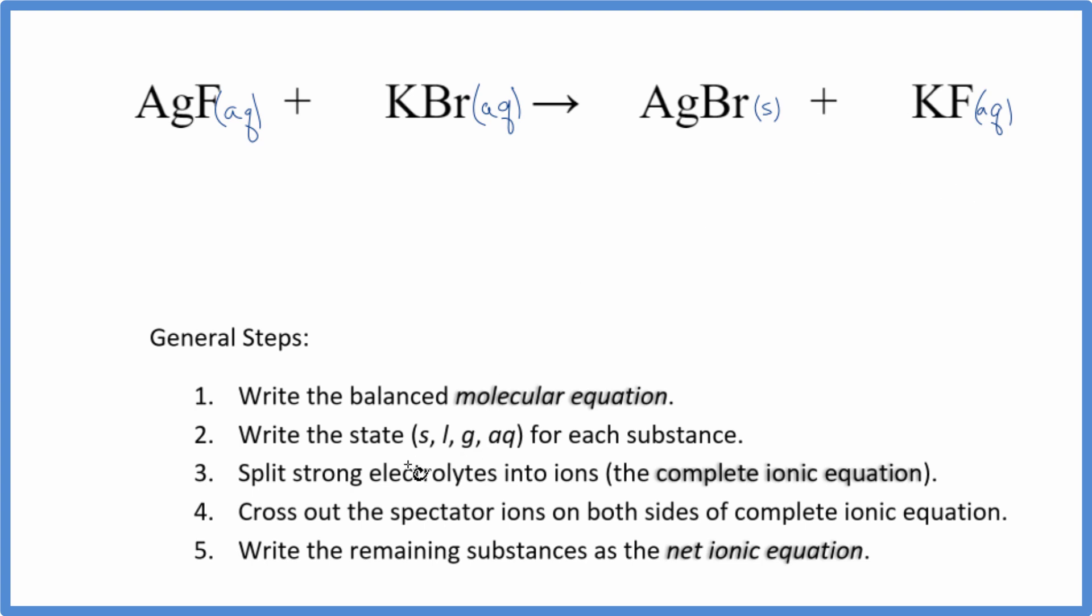So we have our states. Now we can split the strong electrolytes into their ions for the complete ionic equation. Silver will always be one plus, the fluoride ion one minus. So we have Ag+, and I won't write the states until the end, plus the fluoride ion F-. Potassium group one on the periodic table, that's going to be a one plus, bromide ion one minus. So we have K+ plus the bromide ion Br-. Those are the reactants.